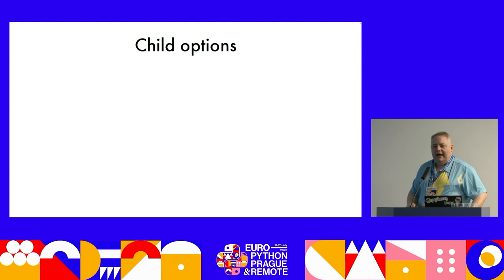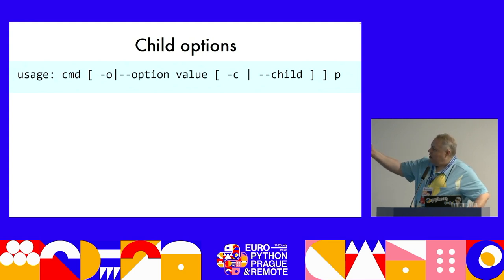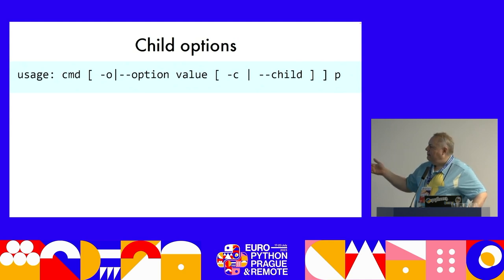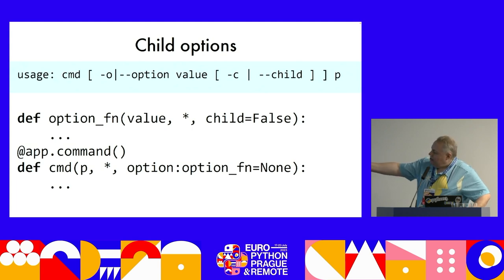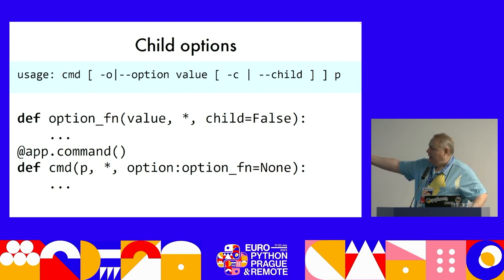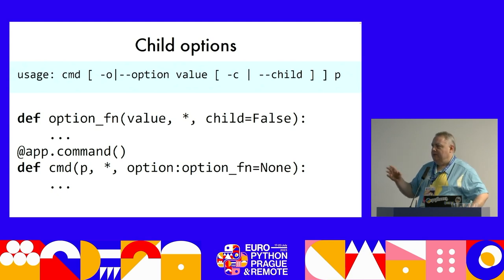Options can themselves have options. For example, --option takes one op-arg but also has a dependent child option called 'child' that's only valid when --option is used. In Appeal, the command function has option_fn as its converter, and option_fn itself has a keyword-only argument called child — that child option is temporarily mapped in as a scoped option and popped off a stack when you exit that scope.